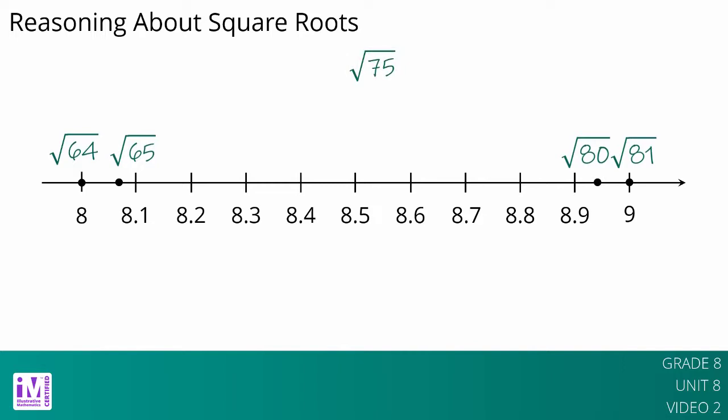The square root of 75 is between 8 and 9 because 75 is between 64 and 81. The square root of 75 is approximately 8.67 because 8.67 squared equals 75.1689.